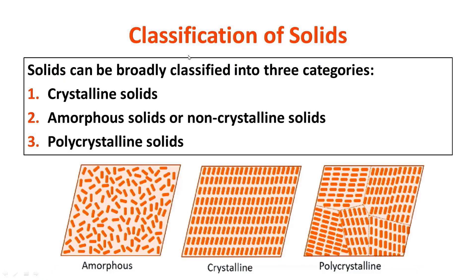To understand the meaning of a crystal or crystalline solid and how it differs from other solids, we need to have basics of classification of solids. Solids can be broadly classified into three categories: the first one is crystalline solids, the second is amorphous solids or non-crystalline solids, and the third one is polycrystalline solids.